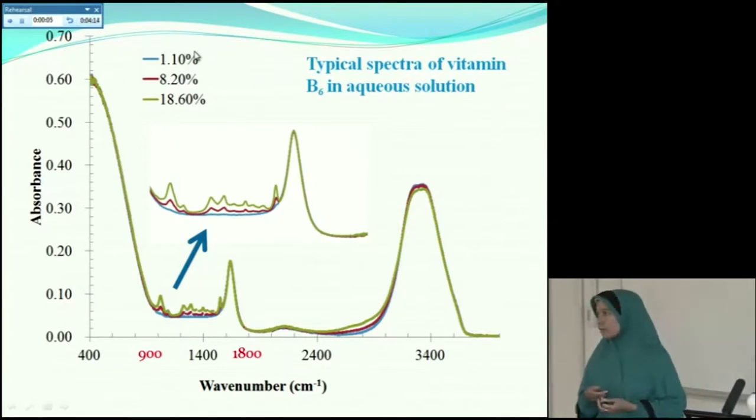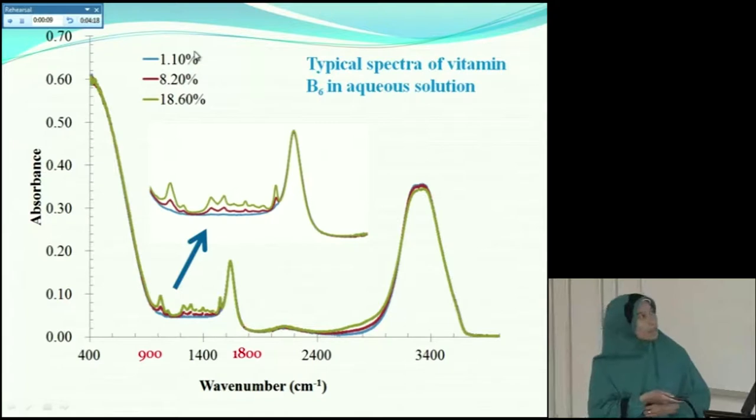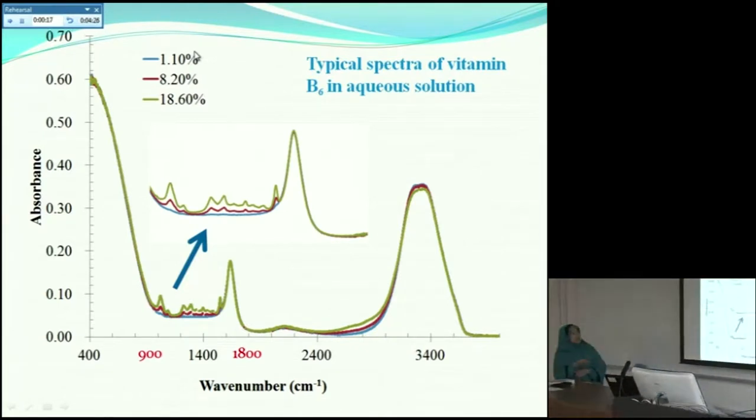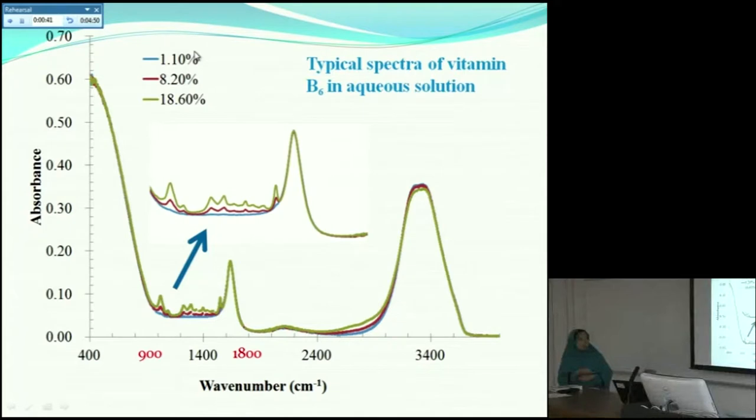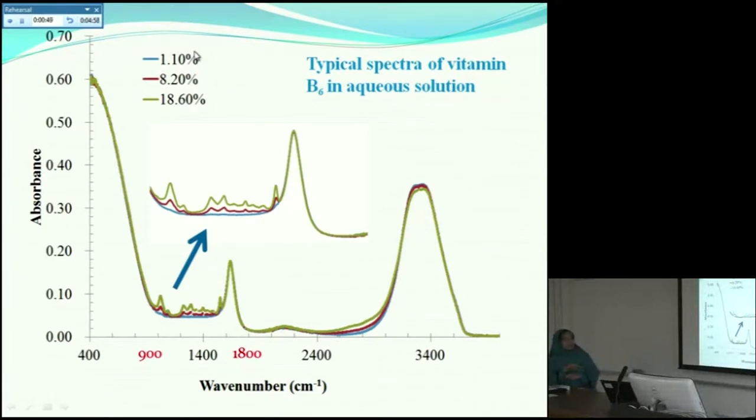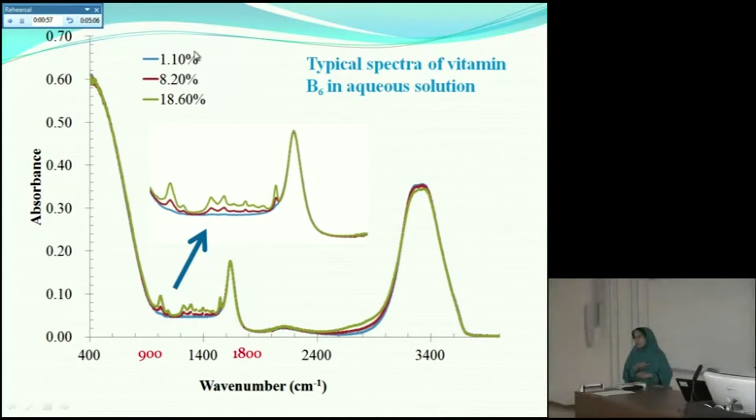Next, move to the result of my experiment. This is the typical spectra of Vitamin B6 in aqueous solution in the low, middle, and high concentration. From this graph we can see that there are several vibration modes here between 900 to 1800 per centimeter of wave number. And we can see too that this phenomena adheres to Beer's law. We said that the absorbance and concentration are linearly correlated.